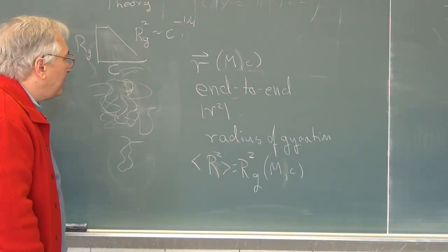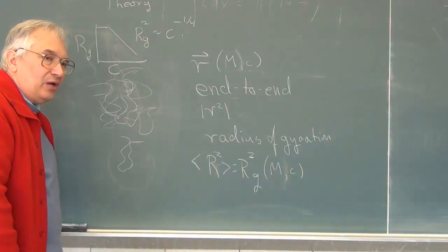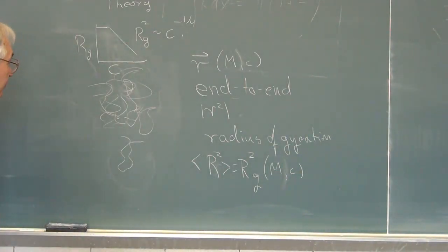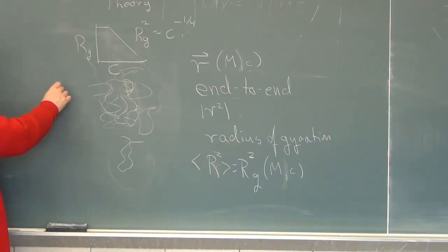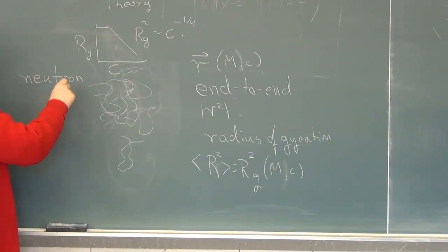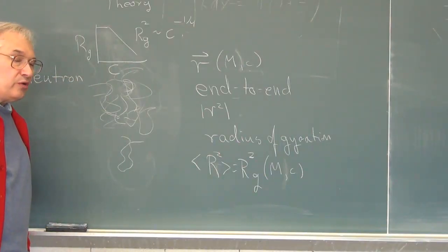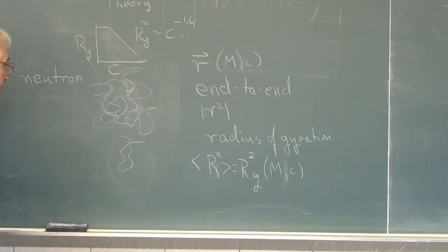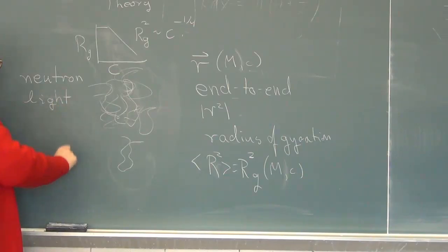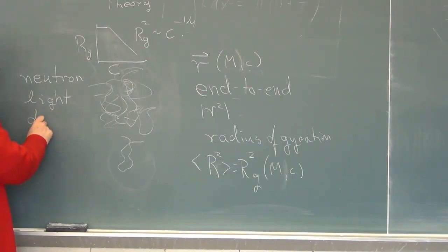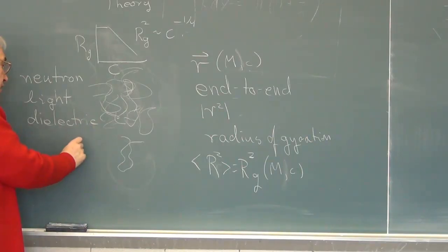If you want to ask how do you measure the size of a polymer chain, there are three sorts of answers. One is neutron scattering, which requires a big atomic reactor and some extremely expensive instrumentation. Another answer is light scattering, which is a whole lot easier and cheaper to do. And the third answer, which gives you a slightly different number because it measures a slightly different variable, is dielectric relaxation.